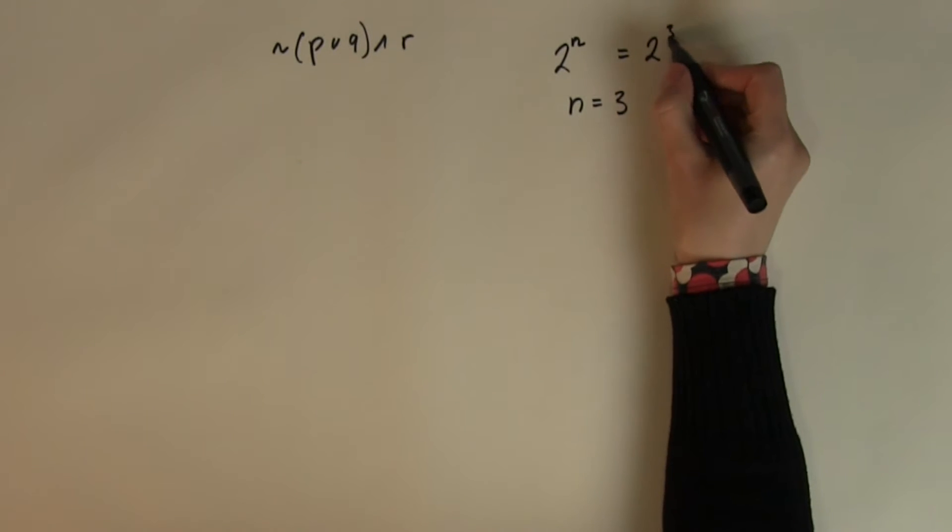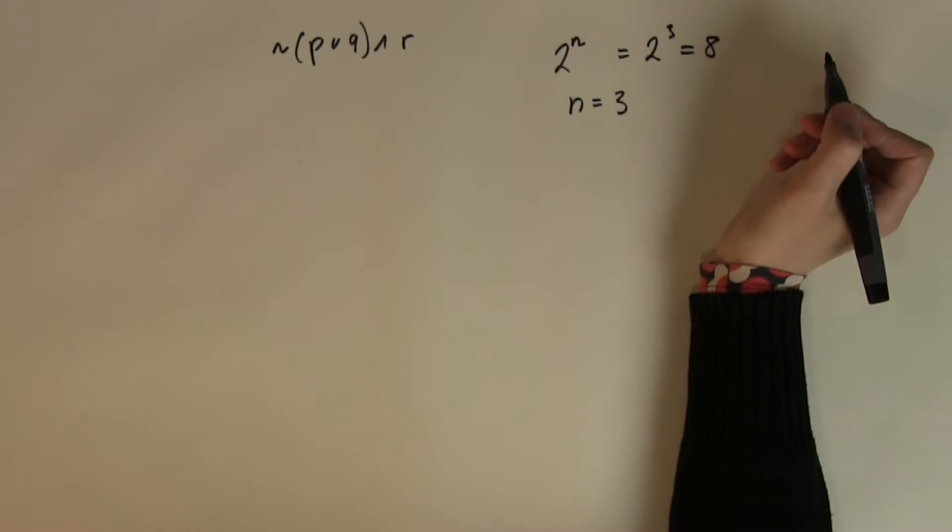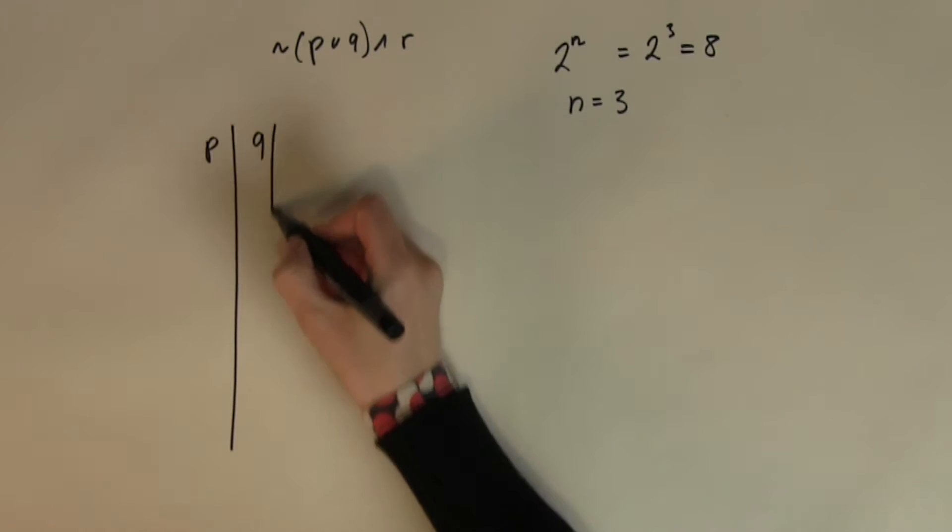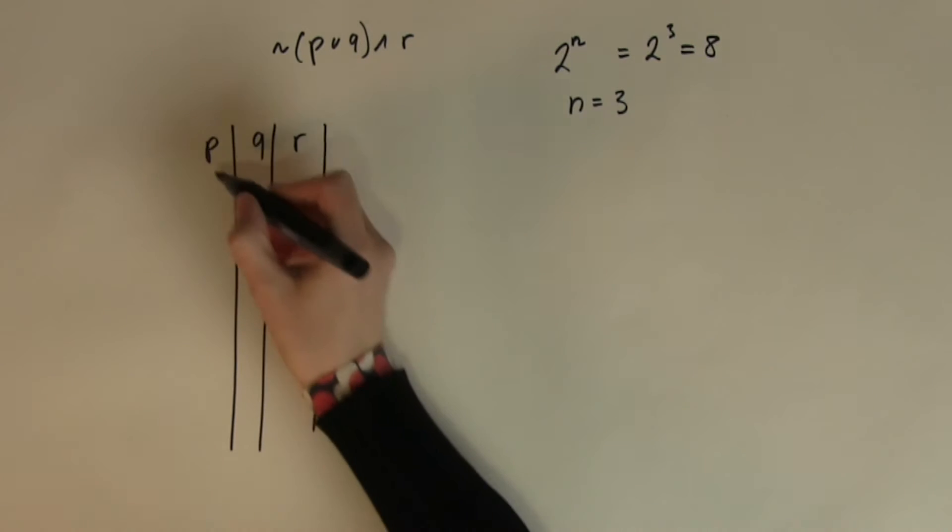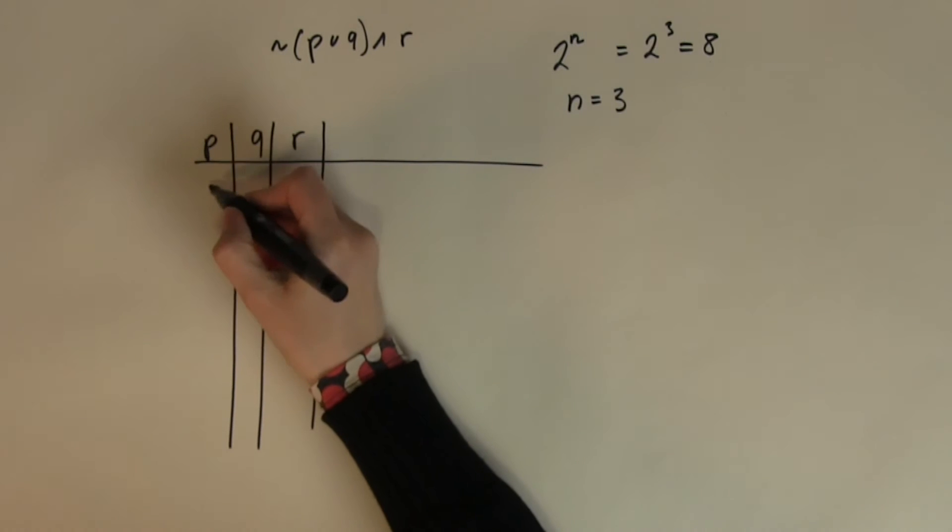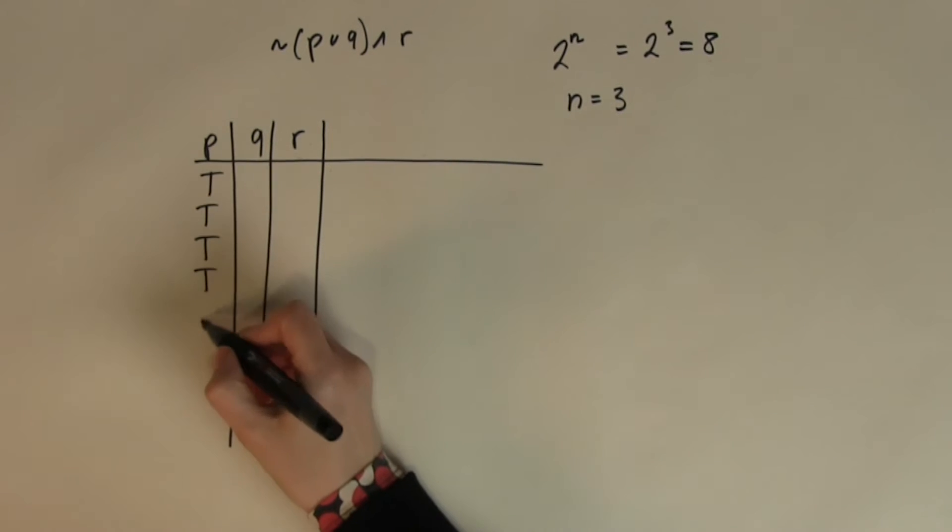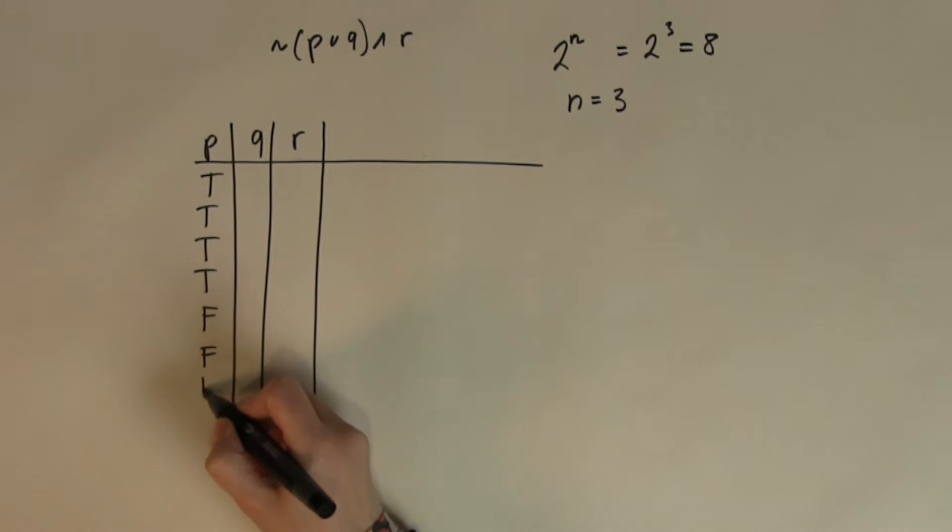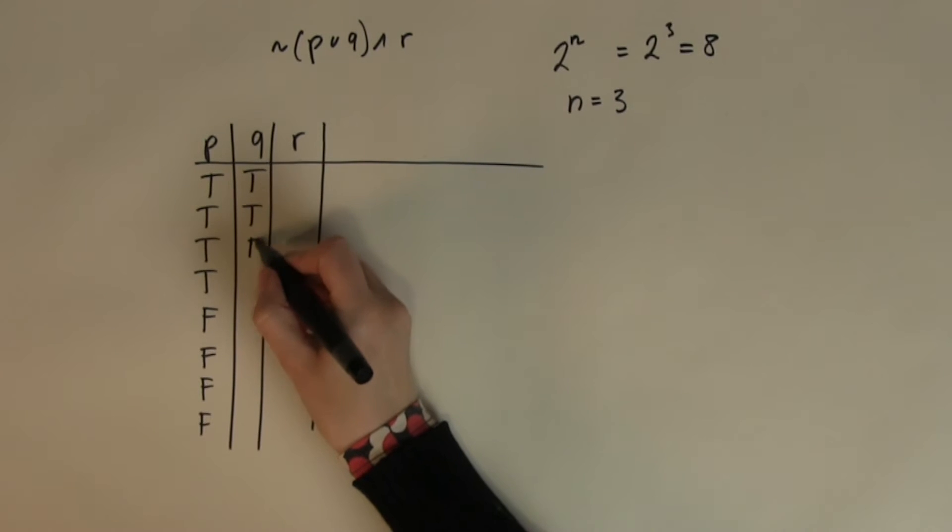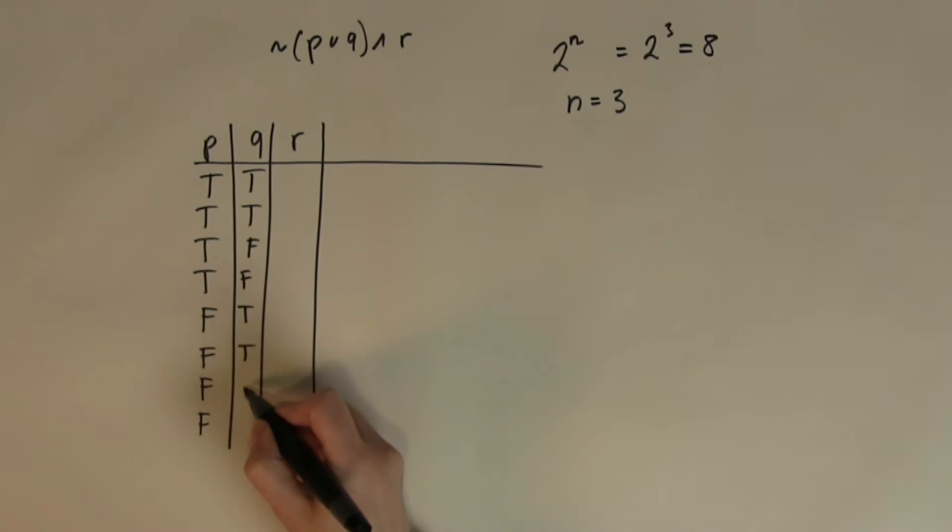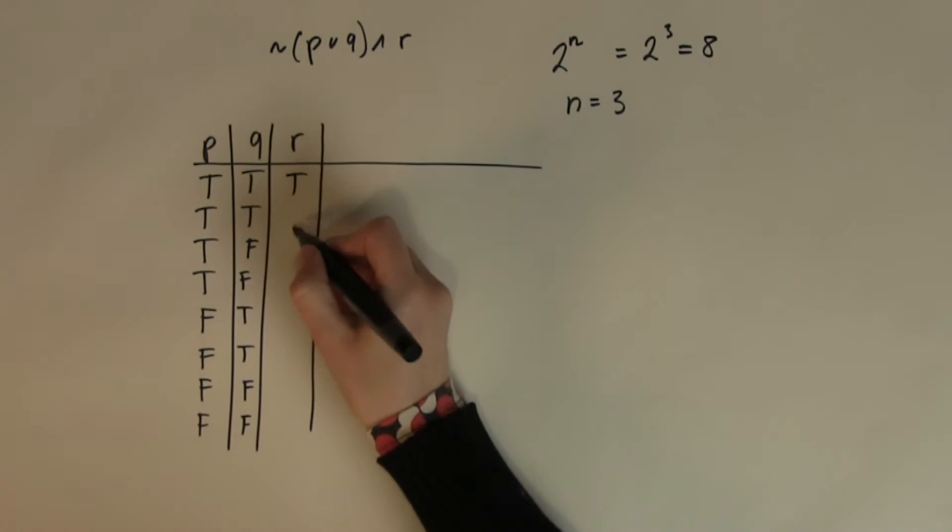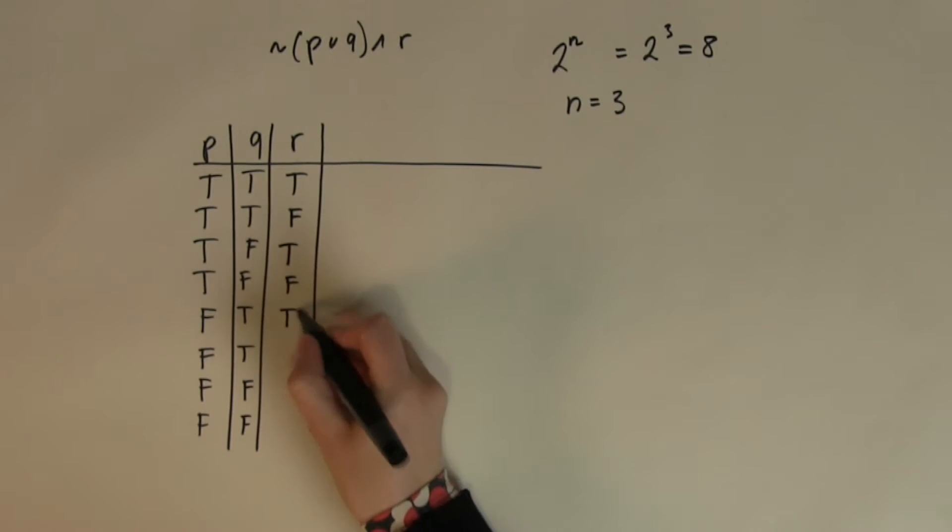So I have got P, I have got Q and I have got R. And the input combination, half of 8 is 4, so I am going to copy 4 trues and I am going to copy 4 falses. Then I am just going to copy 2 trues, 2 falses until I finish filling the table. And then in the last column I am just going to do them alternating 1 by 1.